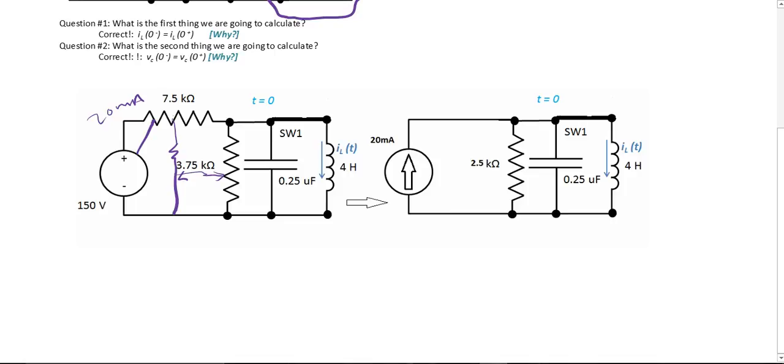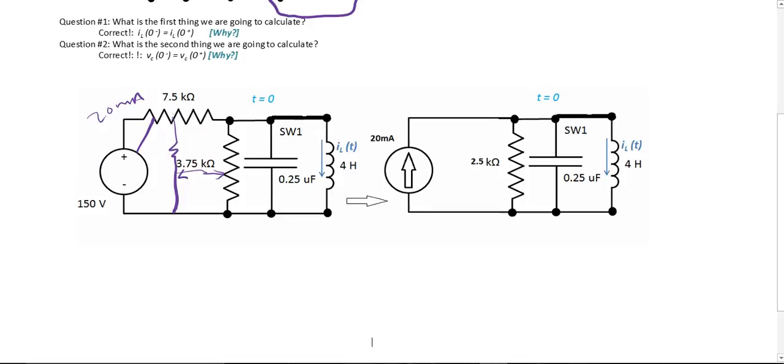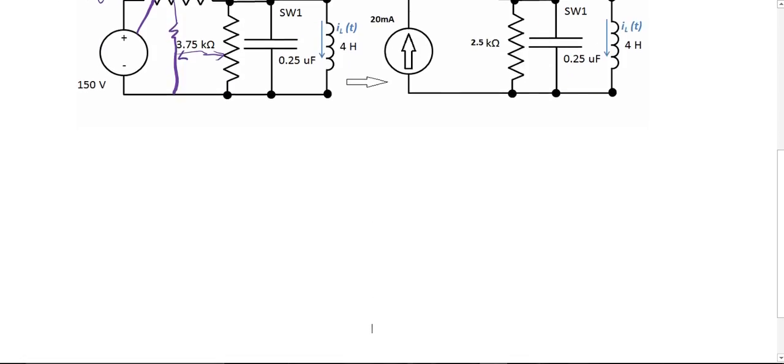And you have your 20 mA. So once you have this, next thing you want to do is solve for alpha and omega.